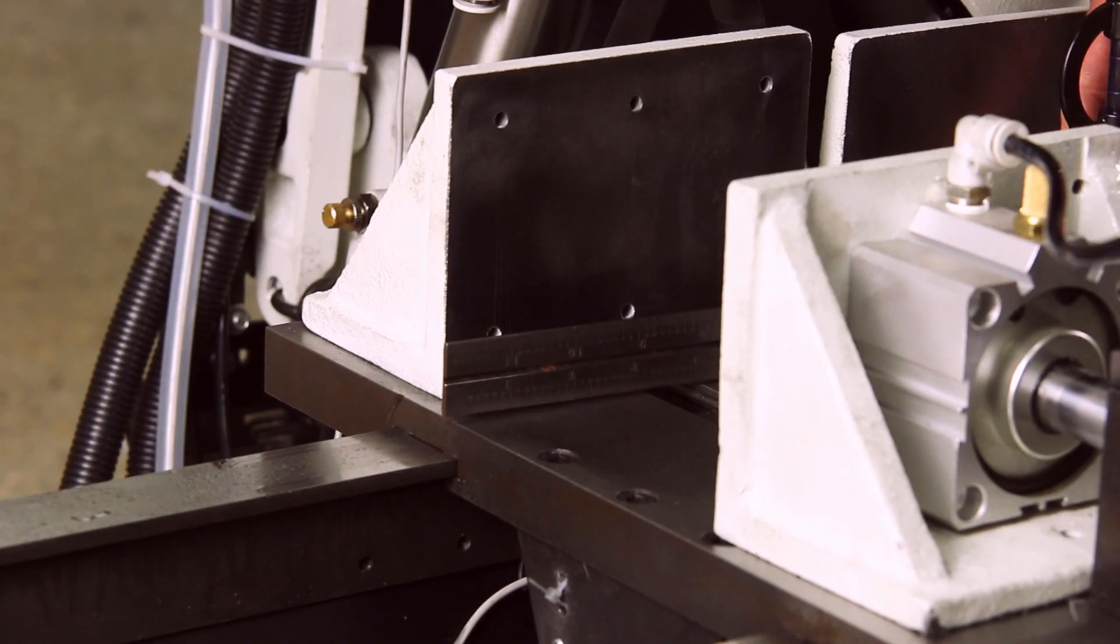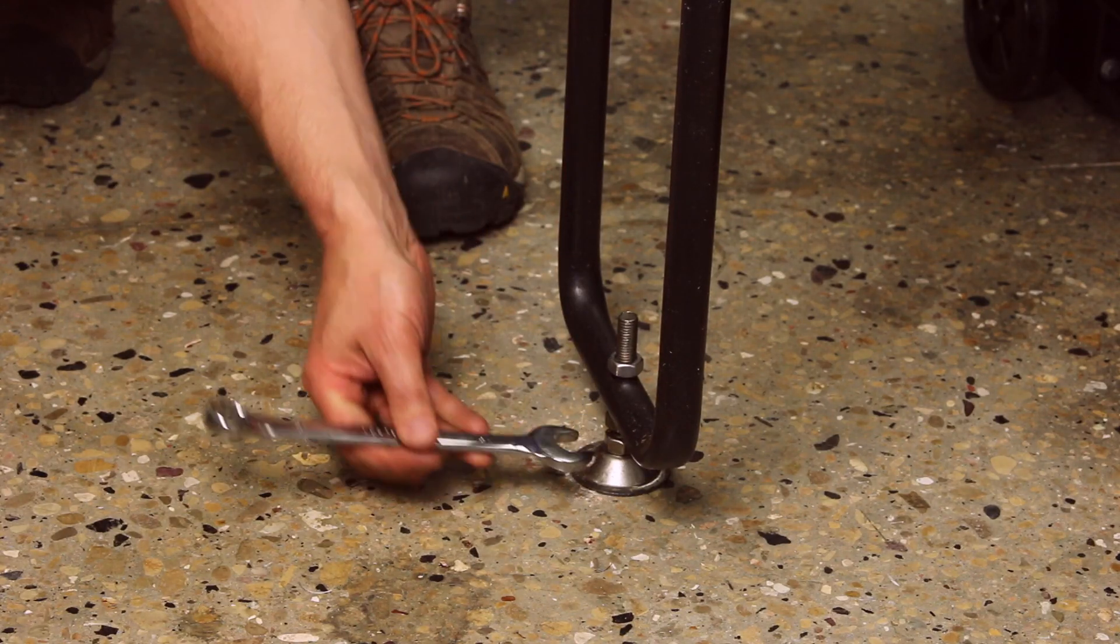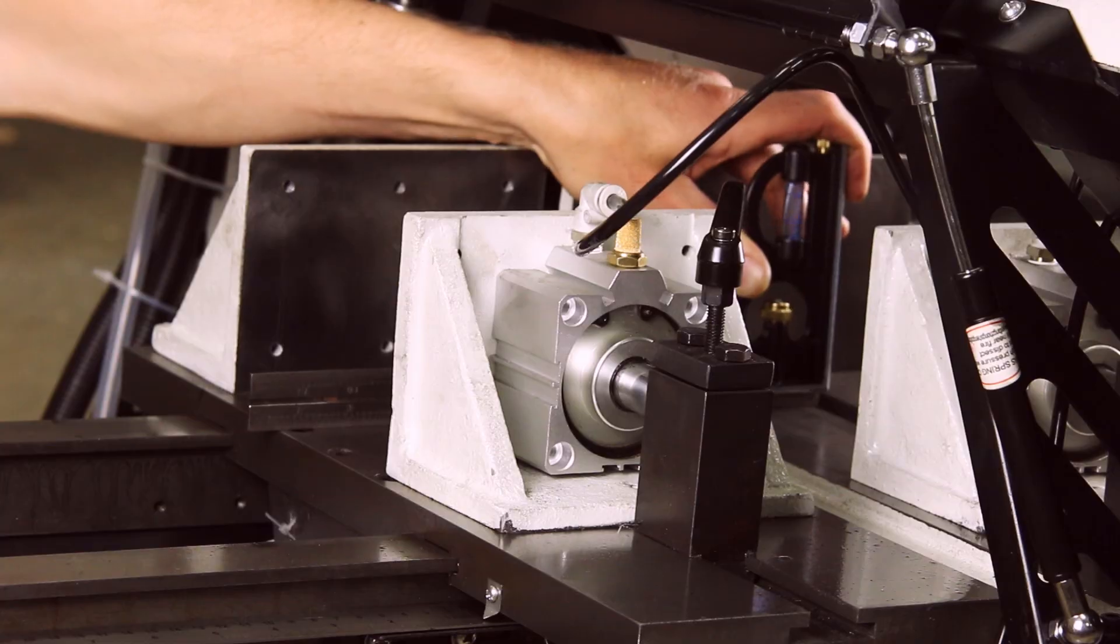Place the square on the base casting. Slide it over the infeed table to check the height. Adjust the back leg until both are at the same height.